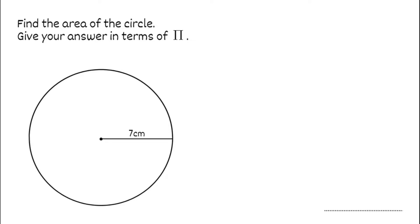So for our first question, we've got to find the area of the circle. It then asks us to give our answer in terms of pi. So when we're looking for the area of a circle, we've got our formula, which is area equals pi r squared — pi times r squared. So when we've got a question like this, all we need to do is substitute in our value of r.